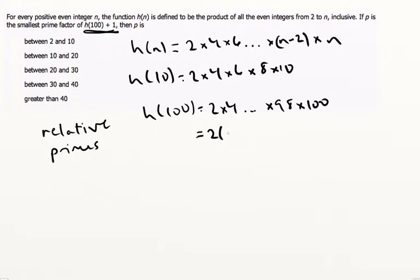But one thing that I will do, and this is a GMAT trick, is when we're dealing with functions of even numbers, I'm just going to pull the 2 out the front. So that's 2 to the 49 times 50. Okay, so basically every number from 1 to 50 is a factor of h(100).